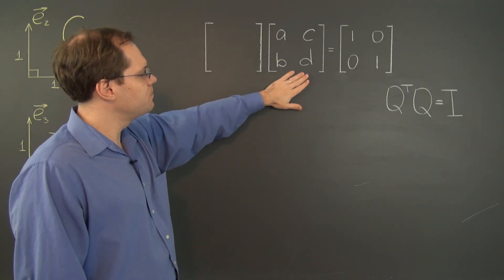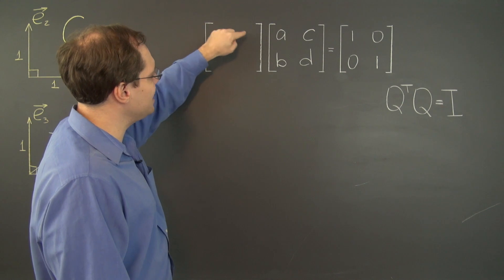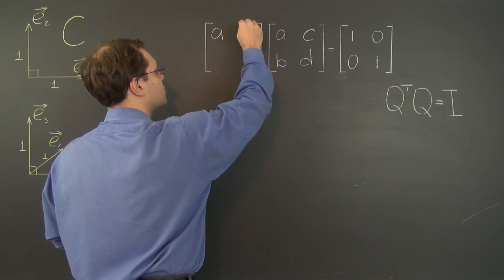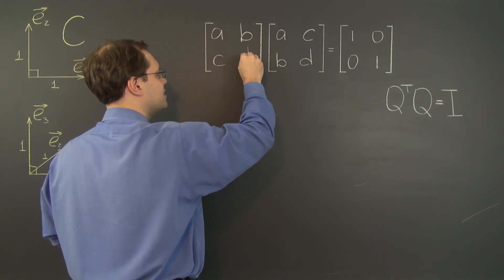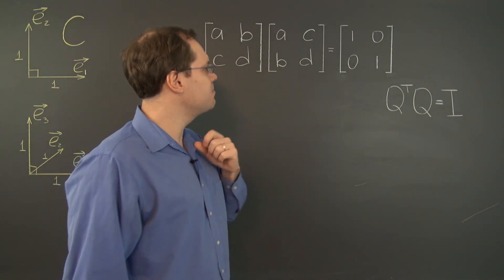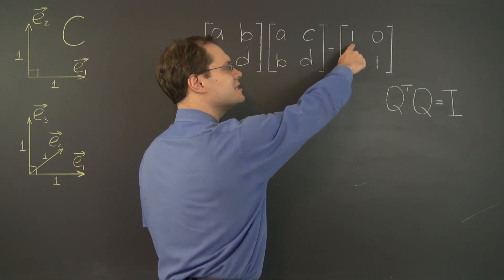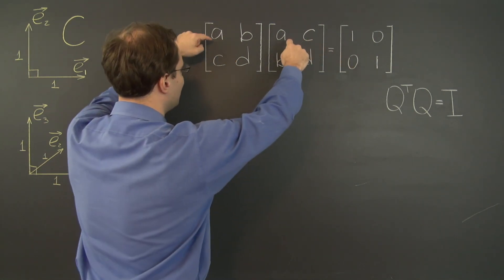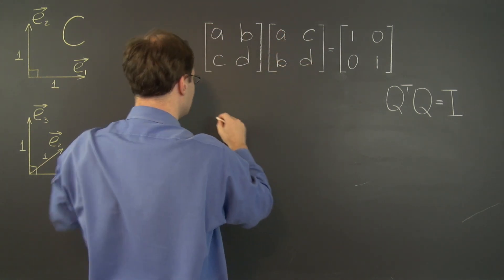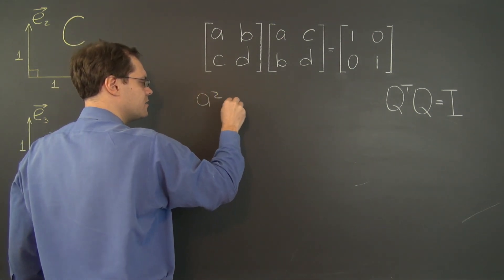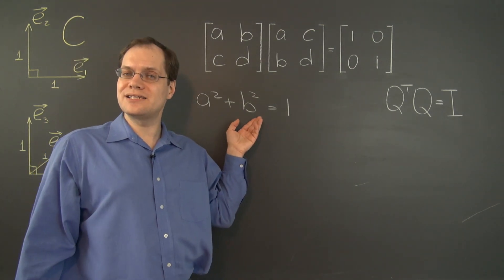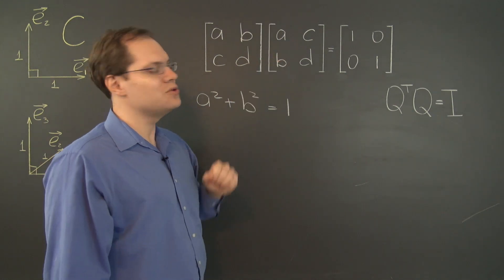Q transpose has rows that are the same as the columns of Q, so its entries are A, B, C, D across. Now, where does the 1 in the top-left of the identity come from? It's the dot product of the first row of Q transpose and the first column of Q, giving us A squared plus B squared equals 1.